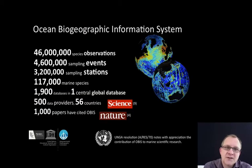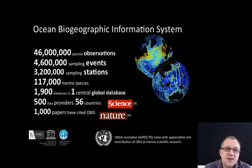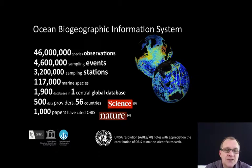To start with a few numbers, OBIS consists of 46 million species observations, more than 4 million sampling events, more than 3 million sampling stations, 170,000 marine species, and it integrates more than 1,900 databases in one central global database. The data were provided by 500 data providers in 56 countries, and at the moment 1,000 papers have cited OBIS, with about 10 papers added per month.